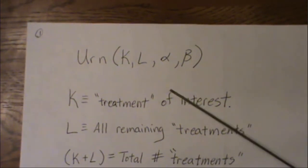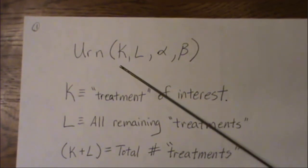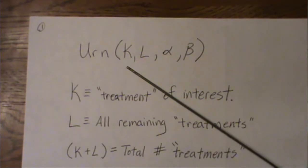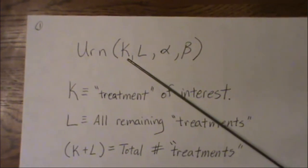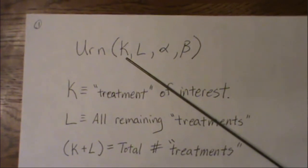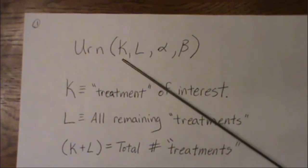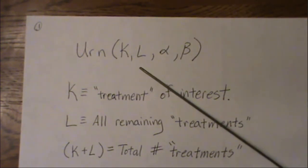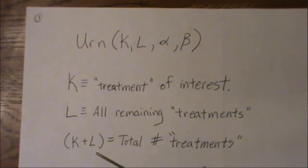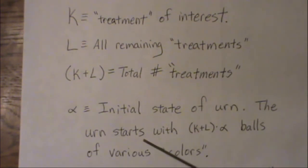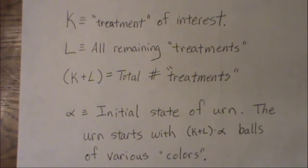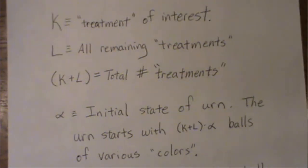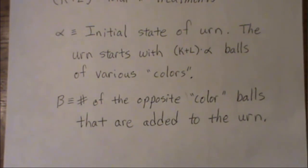For notational purposes, we're going to call it the KL alpha beta urn model. K represents the treatment of interest and can be any number from one upward. L represents all other treatments, so the total number of treatments — in quotes — is K plus L. Alpha is the initial state of the urn: there's alpha balls of each color representing a treatment. Beta is the number of balls of the opposite color that didn't get selected, put back into the urn to help force it to be balanced.